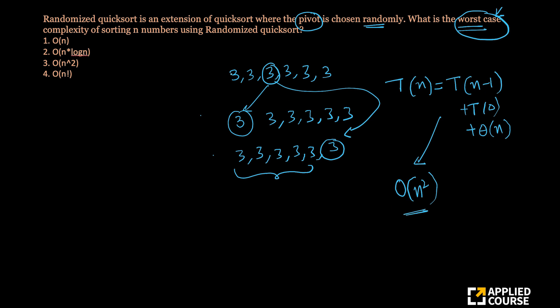So if all the elements are the same, again, you can expect this using the simple randomized quicksort as defined here, you would get a worst case time complexity of order of n square number one.